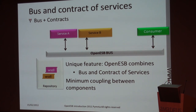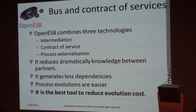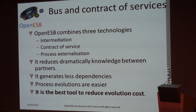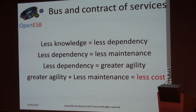OpenUSB is the product that provides two intermediation levels: the first level is the bus, the second level is the contract service via WSDL. That is why I think it is a very powerful tool. OpenUSB combines three technologies — intermediation, contract of service, process externalization — and reduces dependency dramatically between partners. If we reduce dependency between partners, we reduce maintenance. Less dependency means less cost and more agility.